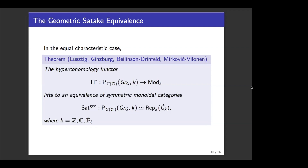So on one hand we have the Satake category, and on the other hand the category of finite dimensional representations of Ĝ. We expect there is an equivalence between them. In fact, in the equal characteristic case, this equivalence was proved by the works of Lusztig, Ginzburg, Mirkovic, and Vilonen. The precise statement is: the hypercohomology functor from the Satake category to the category of finitely generated K-modules yields an equivalence of symmetric monoidal categories between the Satake category and the category of finite dimensional representations of Ĝ. Here K is the coefficient of the sheaf theory we consider; it can be either Z, C, or F̄_ℓ, where ℓ is a prime different from the residue characteristic.